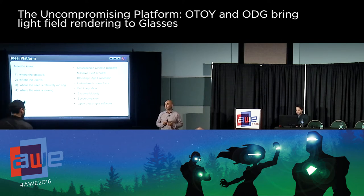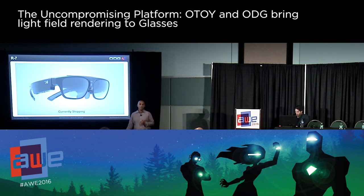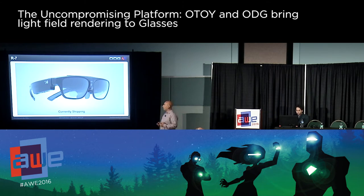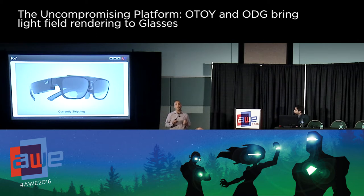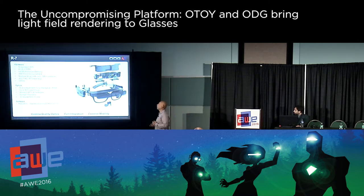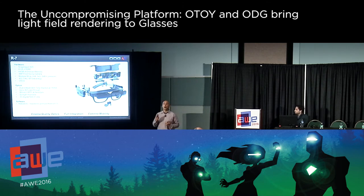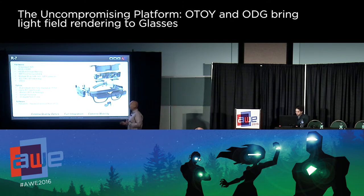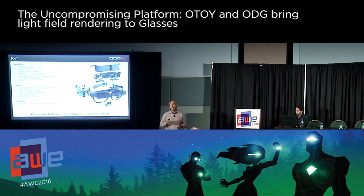The software needs to be simple to code. Our platform uses Android, one of the most widely adopted software platforms. Our R7 glasses — if you see our booth downstairs, they're currently shipping and available. They're targeted at the enterprise market at $2,750. Full integration, extreme mobility, 30-degree field of view, 720p independently driven to each eye. Inside: bleeding-edge Snapdragon 805 processor, 4 gigs of DDR RAM, 64 gigs of internal memory, dual-band Wi-Fi at 5GHz and 2.4GHz, and two separate three-axis gyros, magnetometers, and accelerometers that know where your head is and how you're interacting.